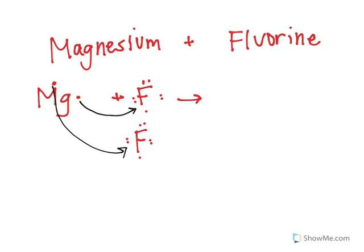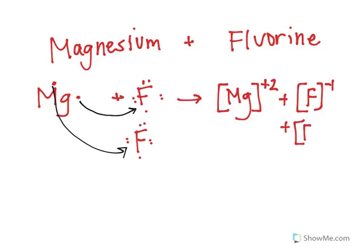Now we need to draw the ion form of all of these atoms now that they've transferred their electrons. We're going to draw our brackets to show that there's an ion being formed. Magnesium has lost both of these electrons, so it now has a positive 2 charge. And then we have two fluorine atoms to account for, and each of them is only a charge of negative 1. But they all have a full shell, so we'll draw all those electrons around the outside. And the charge is going to be negative 1 here.